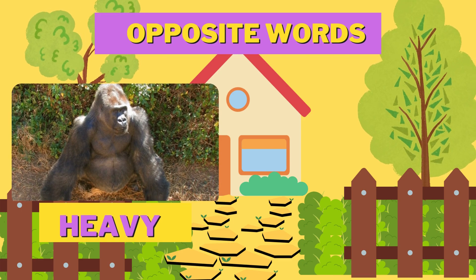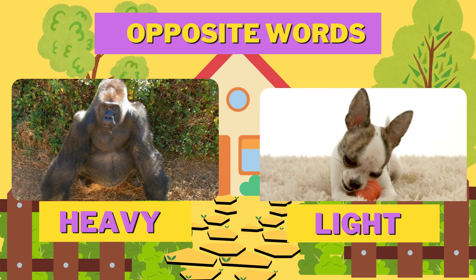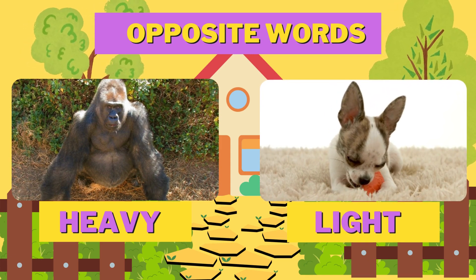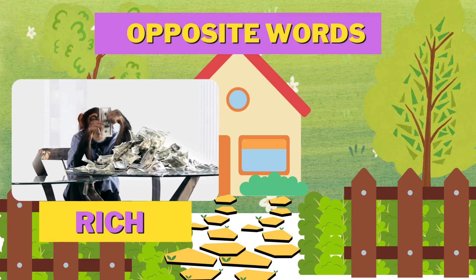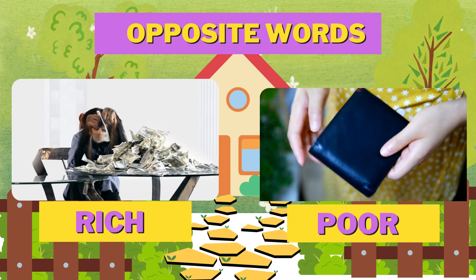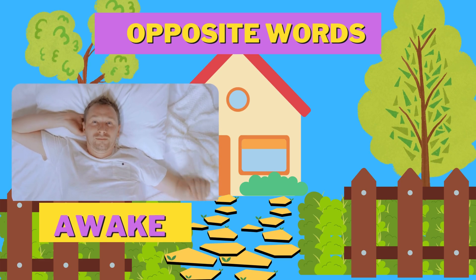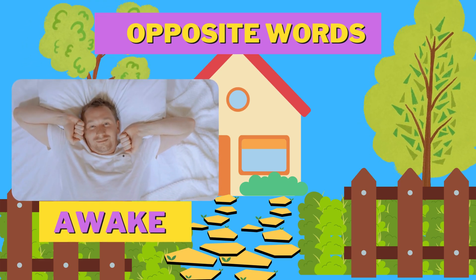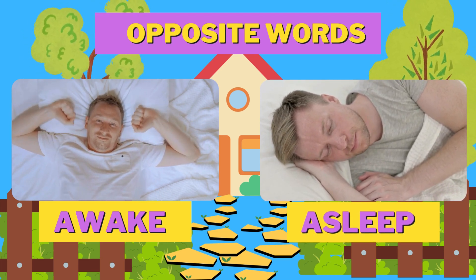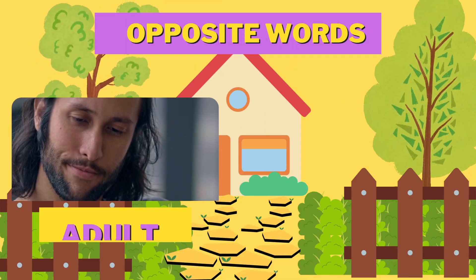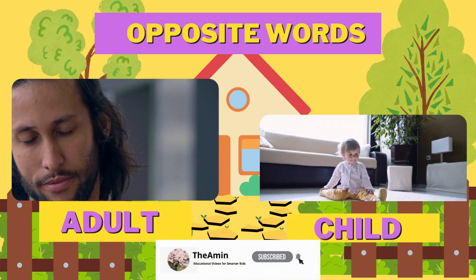Heavy. Light. Rich. Poor. Awake. Asleep. Adult. Child.